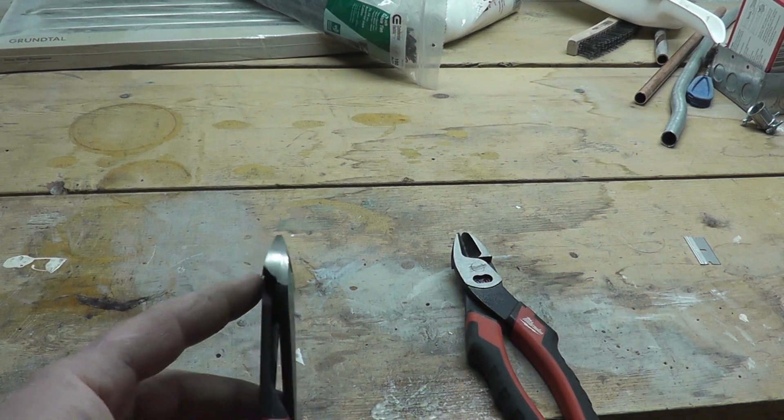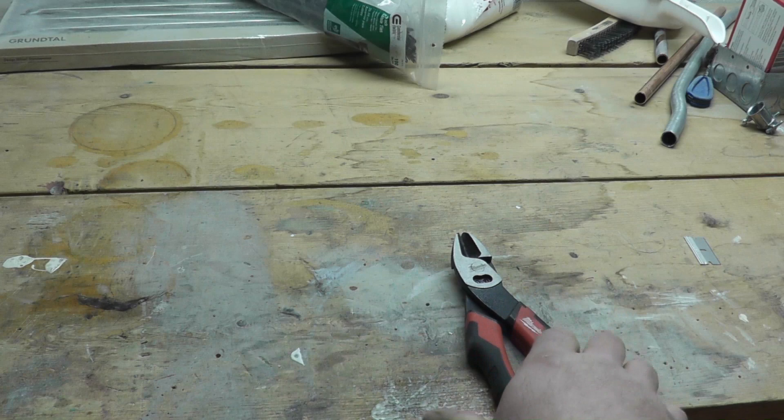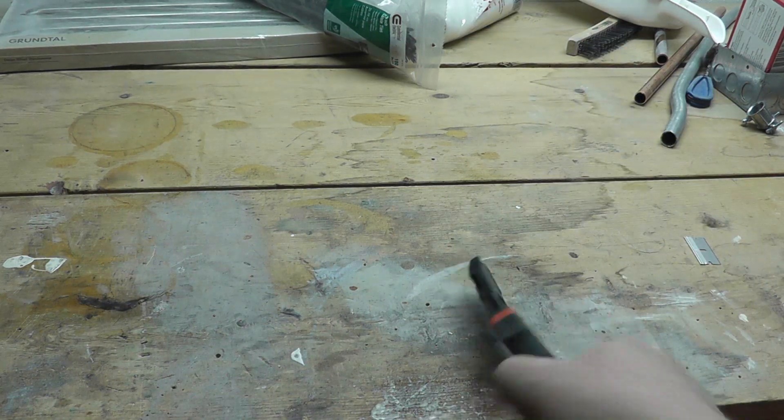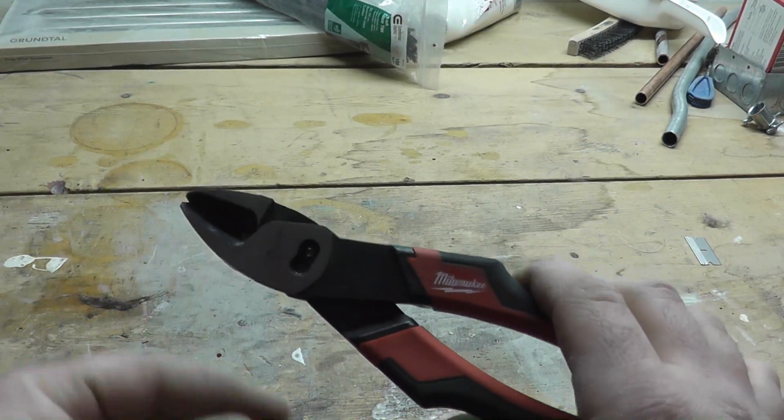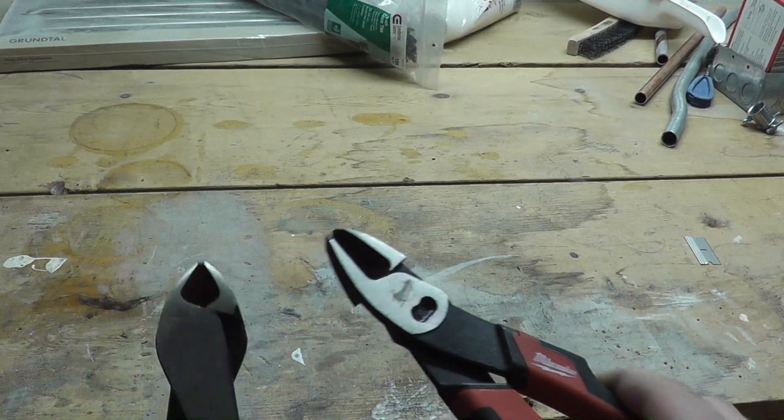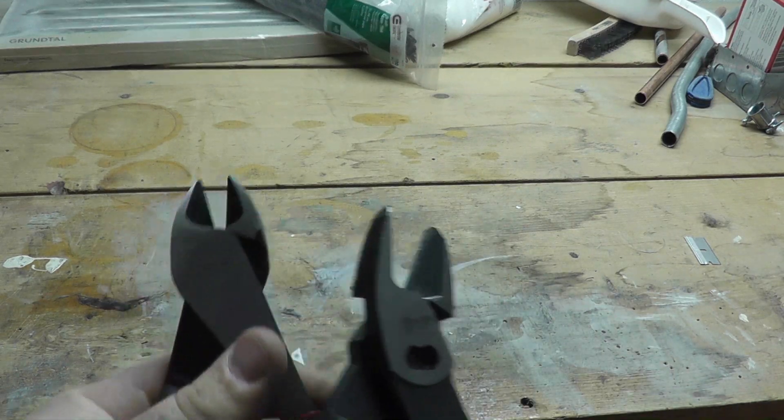I mean, these you still do have to hold it at an angle, but I don't know, I've been using these for so long I like the straight ones much better. Now biggest gripe with these - you see the cutting surface on this thing? It's much, much bigger than the Klein one here.